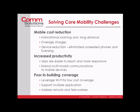Poor in-building coverage is a pretty big challenge. This is the ability to leverage your existing Wi-Fi network to provide a low-cost coverage solution for cellular phones. Many people are installing DAS — distributed antenna systems — from individual carriers. If you have Verizon phones you need one antenna solution, and if you have AT&T users you need another. This solution allows us to address poor in-building cellular coverage by utilizing our Wi-Fi network instead.